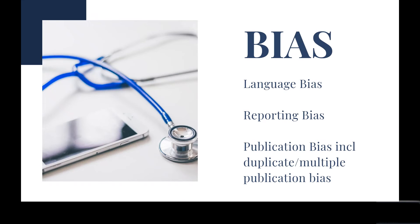The next few types of bias come under the reporting bias umbrella, starting with publication bias. This relates to the tendency for positive results to be published more frequently than negative results, which is why it is important for researchers to source that unpublished data. There is also a type of bias called multiple or duplicate bias, and this is where studies — often those with significant results — are published in more places, making it easier to notice them for a systematic review.